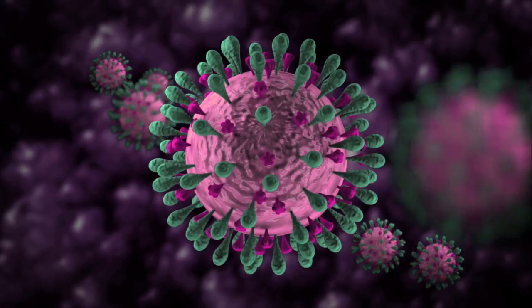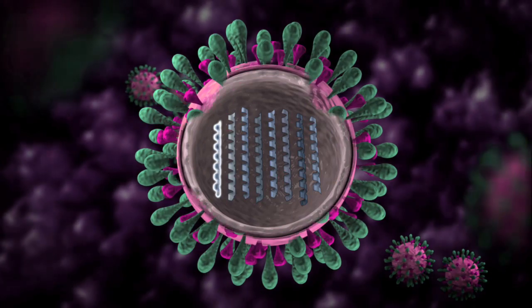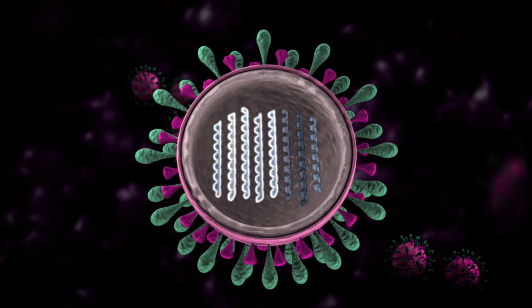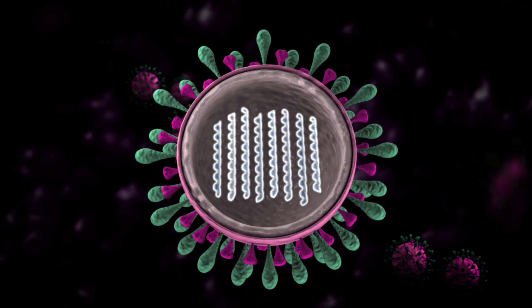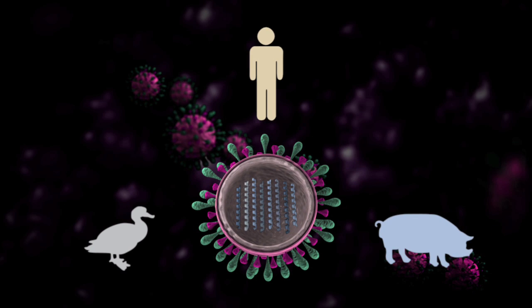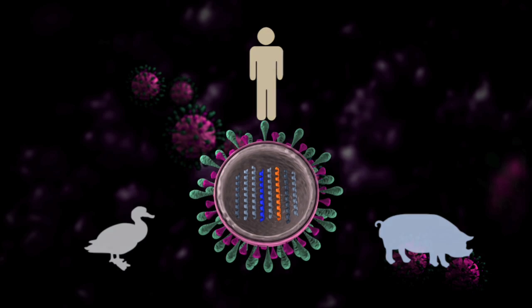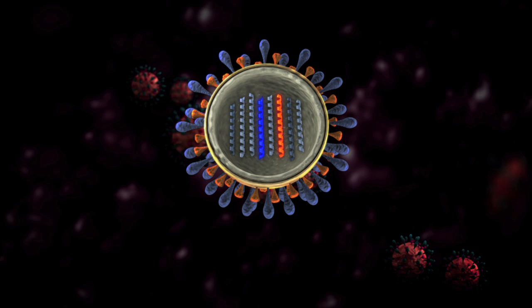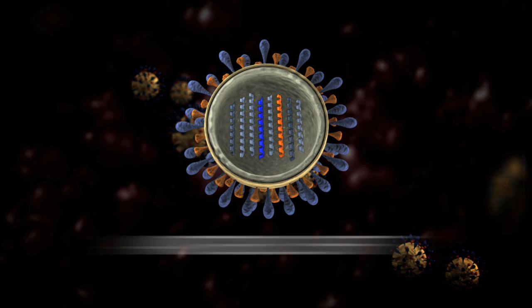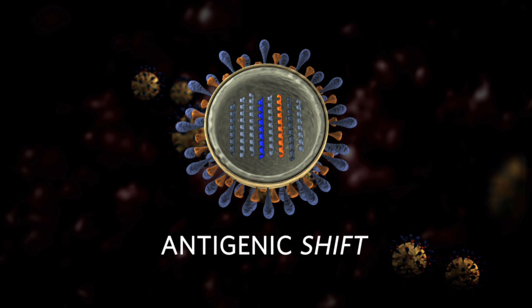Influenza consists of eight different segments. And if you have a mixture of the segments — for instance, some segments that come from pigs, some from birds, some from humans — you can then produce an entirely new virus. That's called antigenic shift, and that is the cause of a new virus causing a pandemic.